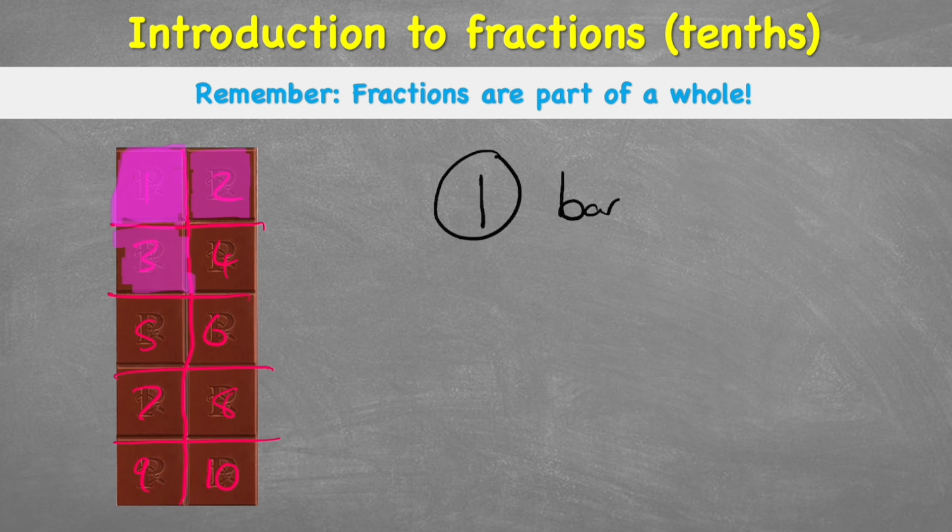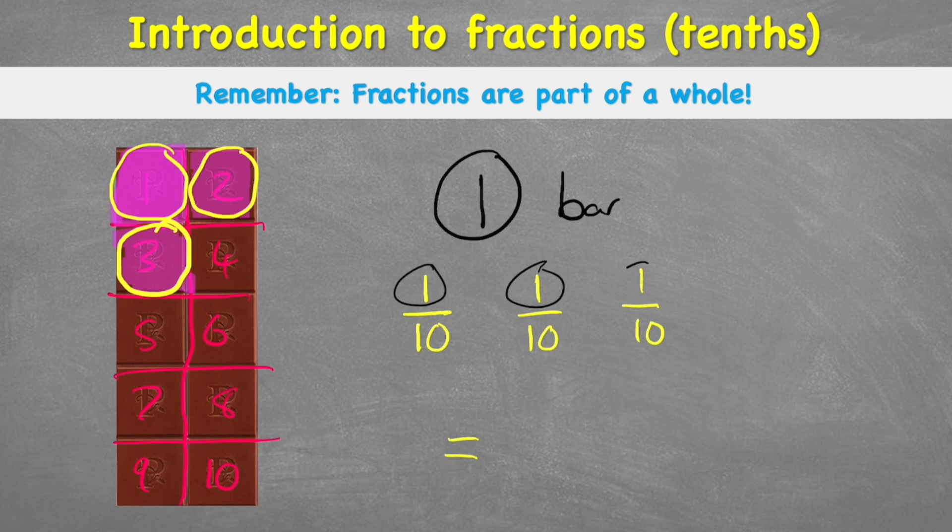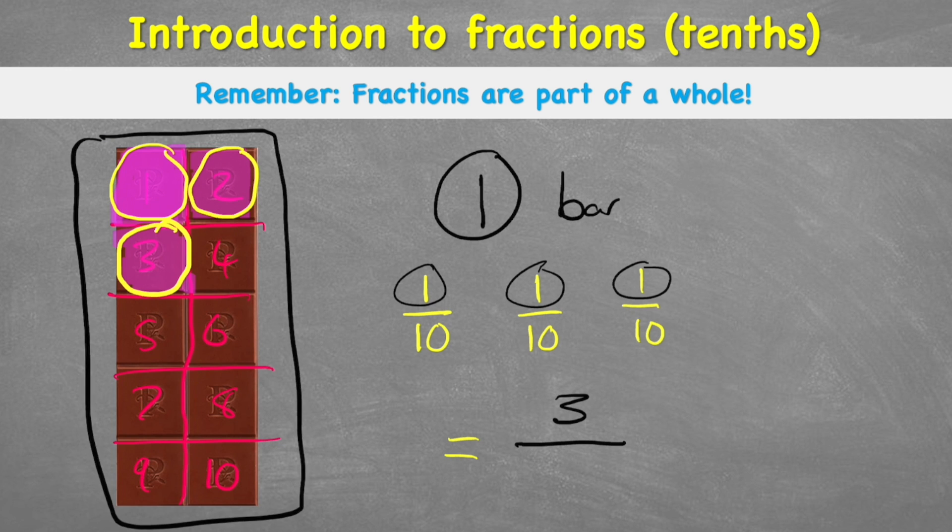So what would I have if I actually shaded another couple of these sections up? Well, I had one tenth. This one here. Then I had another tenth. And then I had another tenth. So all together, I have what? Well, I can see I have one, two, three. And we still have ten sections to our chocolate bar. So my denominator is still ten. So here I have three tenths.